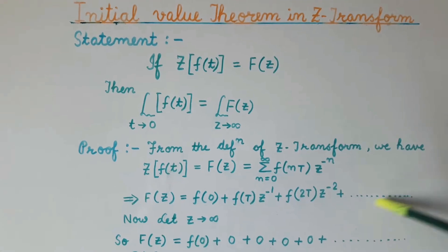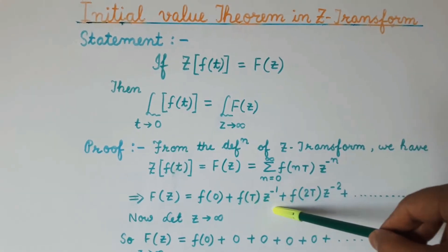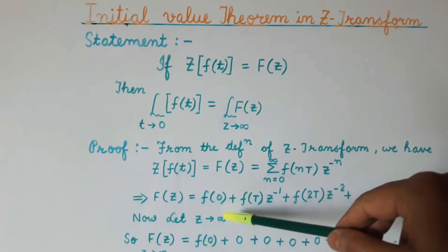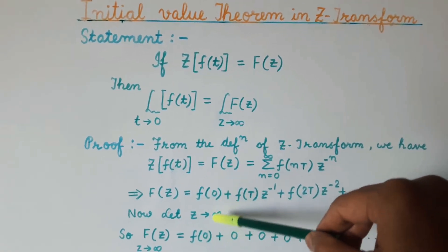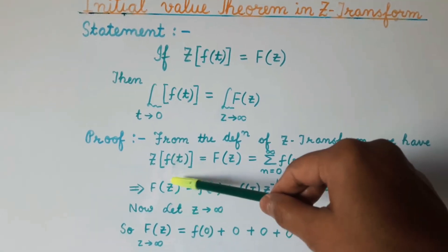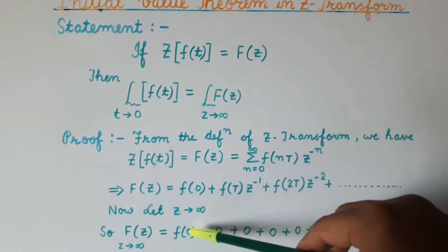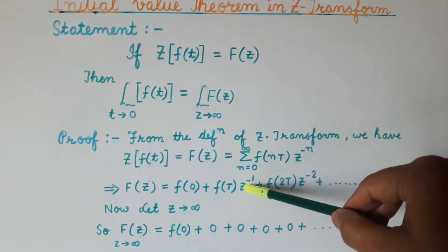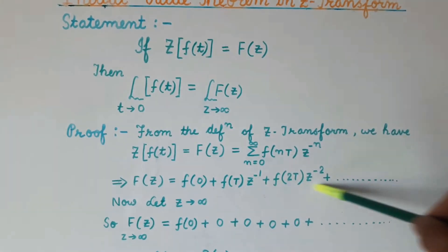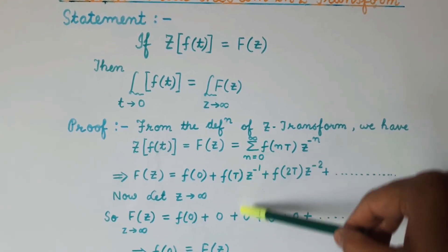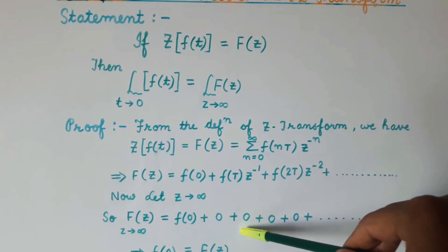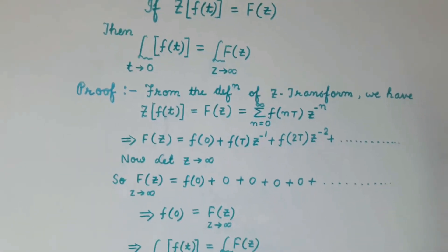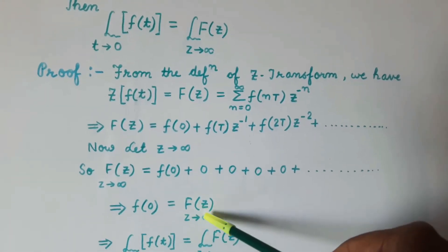Here the value of n is 0 in the first expression, n is 1 in the next, n is 2 after that, and so on. Now let the value of z tend to infinity. So F(z) when z tends to infinity will be equal to f(0) plus 0 plus 0 plus 0, because substituting z equal to infinity makes those terms 1 by infinity, and 1 by infinity is 0. So all terms become 0 except f(0).